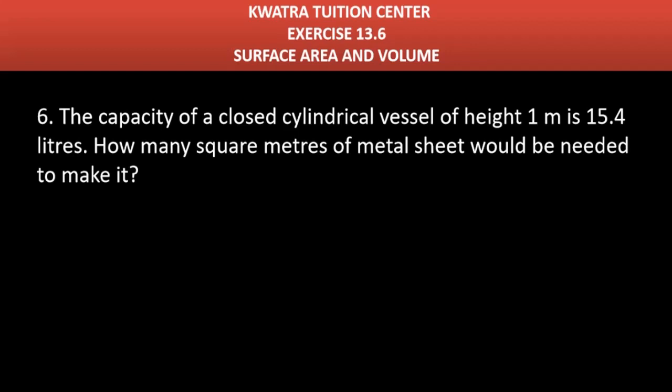Starting with question number 6, it says the capacity of a closed cylindrical vessel of height 1 meter is 15.4 liters. How many square meters of metal sheet would be needed?